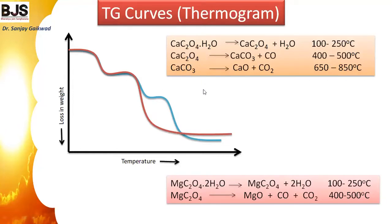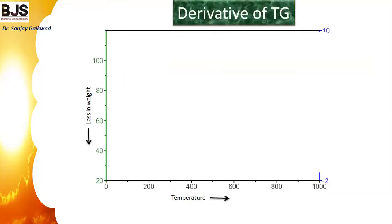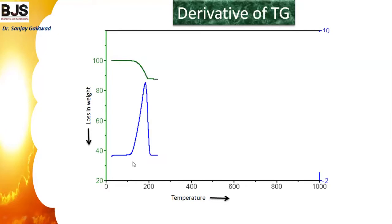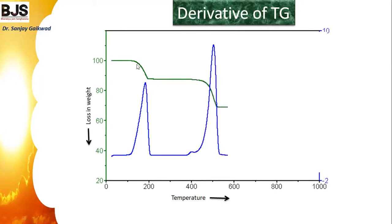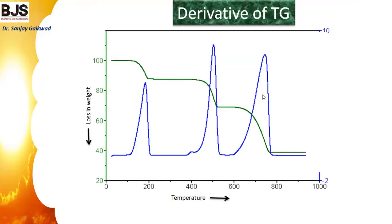From this analysis, we can study the mechanism and stability of thermal reactions. These are the benefits of this technique. From the thermogram, when we observe the derivative, we can see the percentage loss in weight. From that derivative curve, we can easily calculate the disintegration temperature — what temperature corresponds to each loss step: first, second, and third temperature losses.